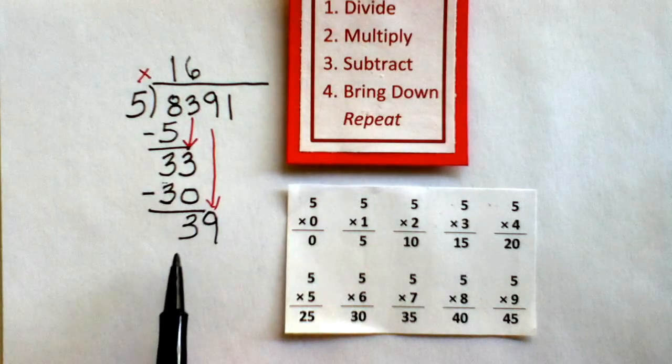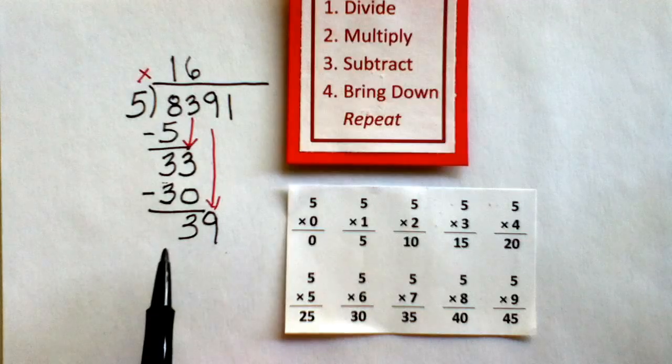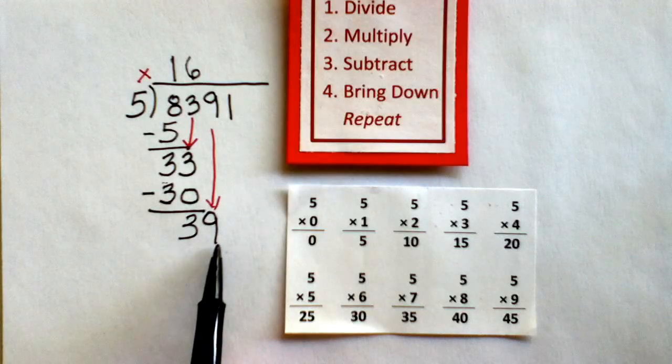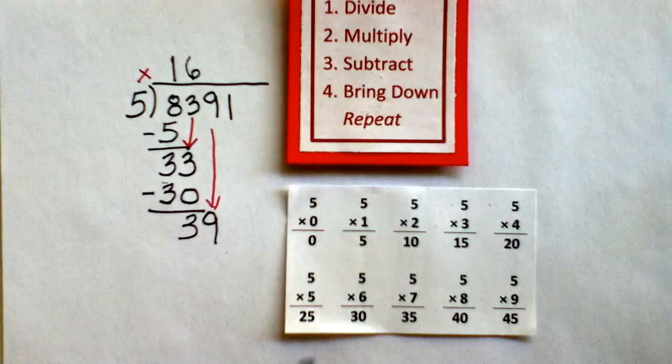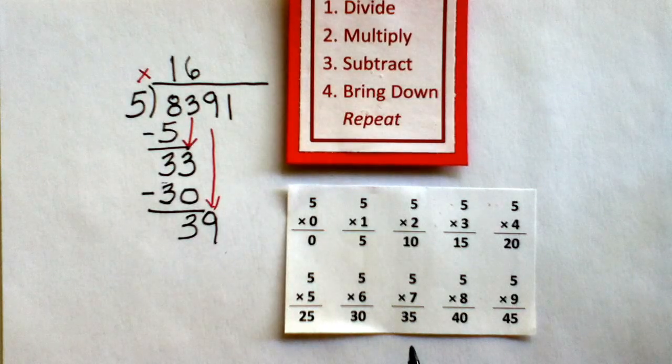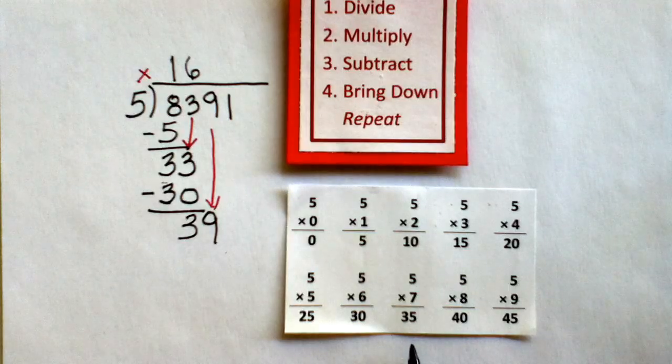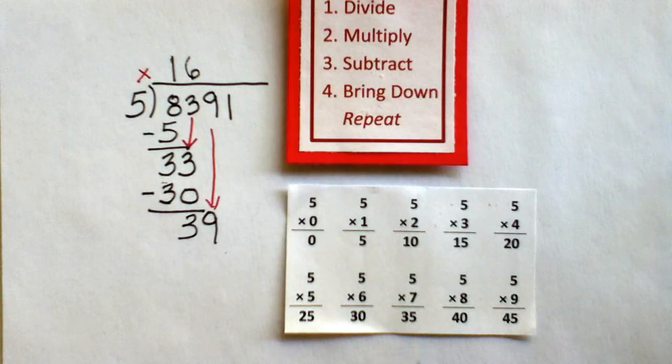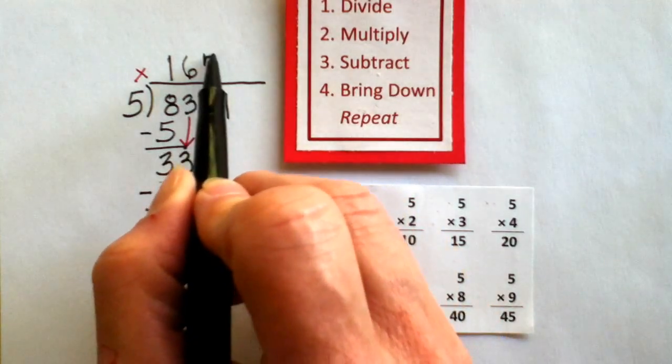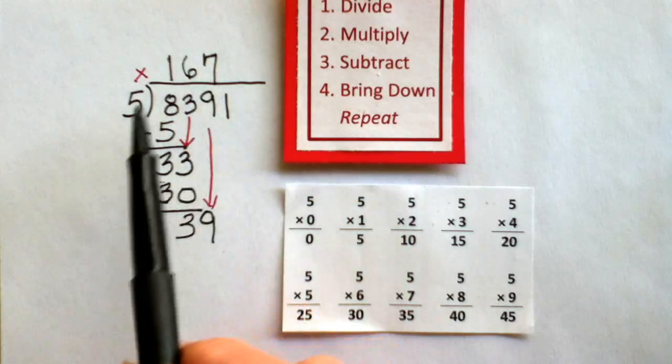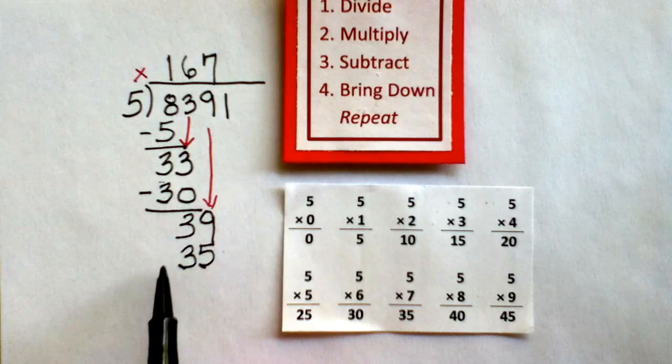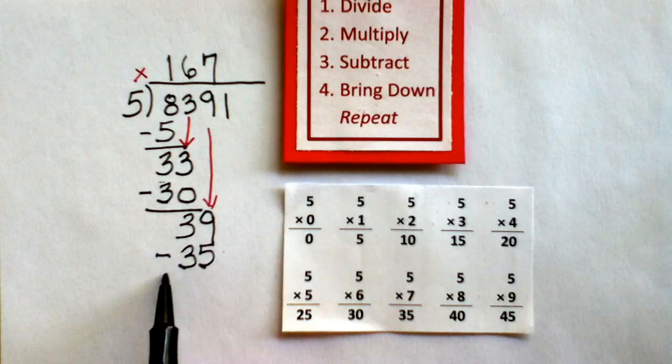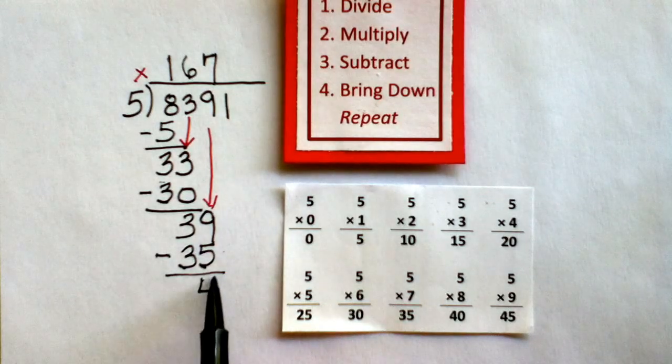Now I look at the number 39, and I repeat that process. Step 1, does 39 divide by 5? Yes, it does. And I look at my multiplication facts, and I see 5 times 7 is 35. And that's the closest I can get to 39 without going over. So I write 7. Then I multiply. 7 times 5 is 35. Then I subtract. 39 minus 35 is 4.